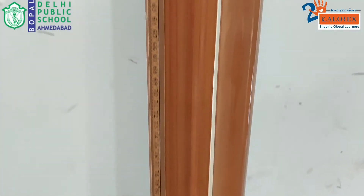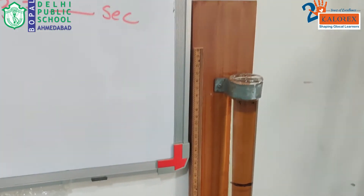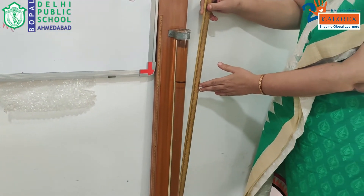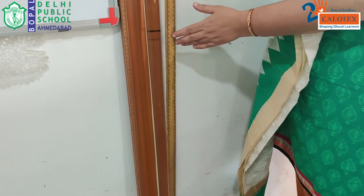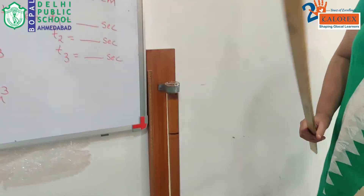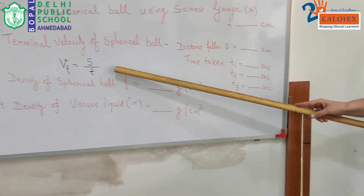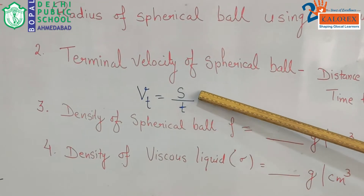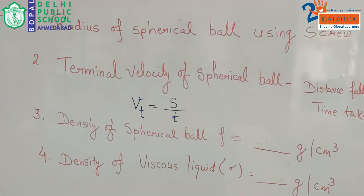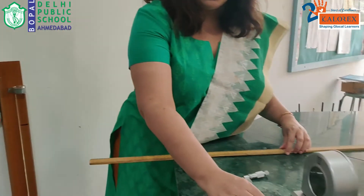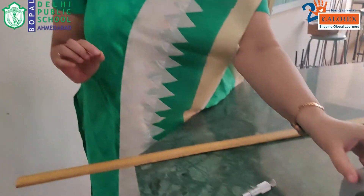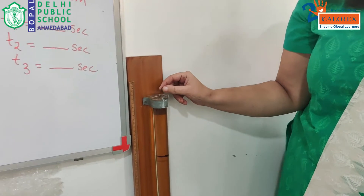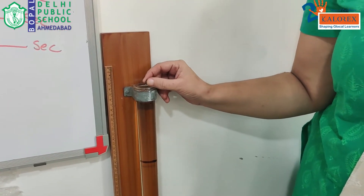Using a normal scale, we will first measure the distance between the two marks and note it down. Then we will make the bobs fall through the viscous liquid.